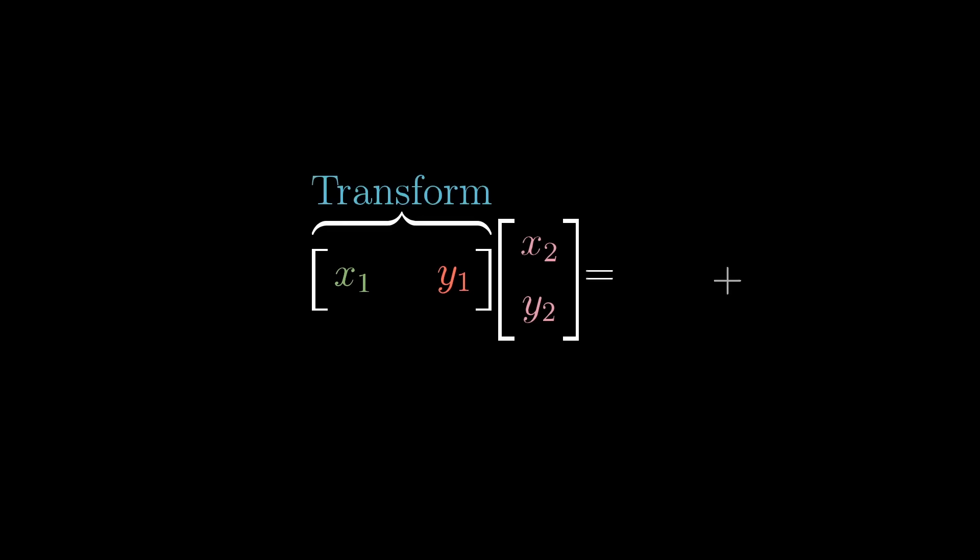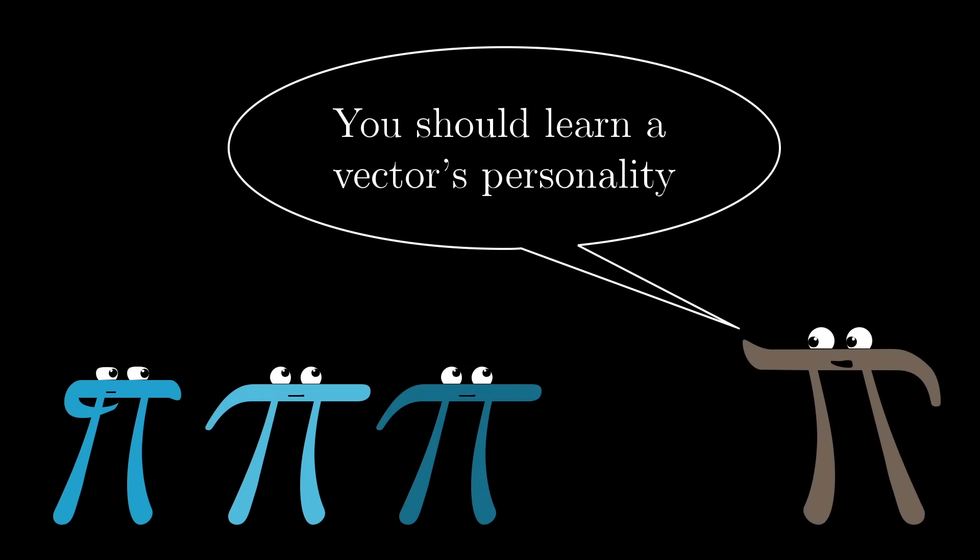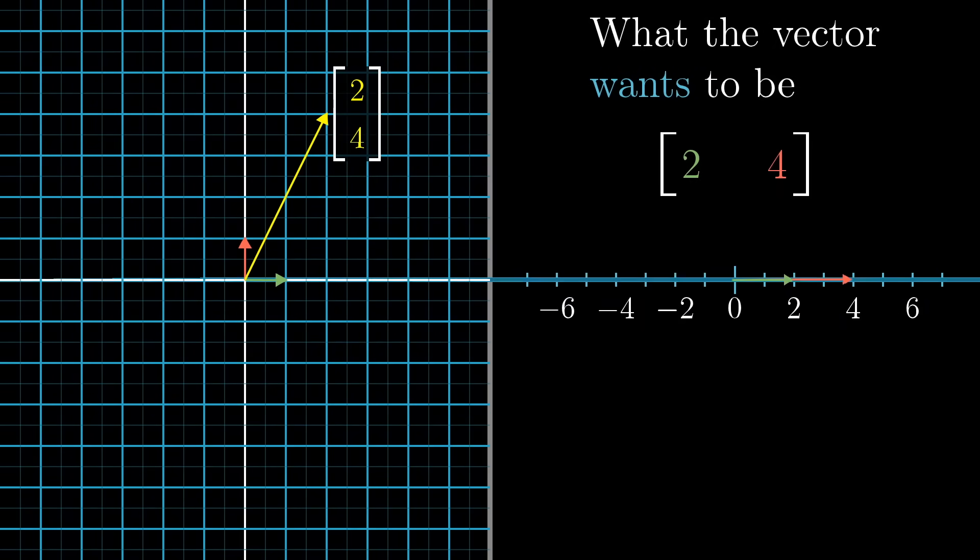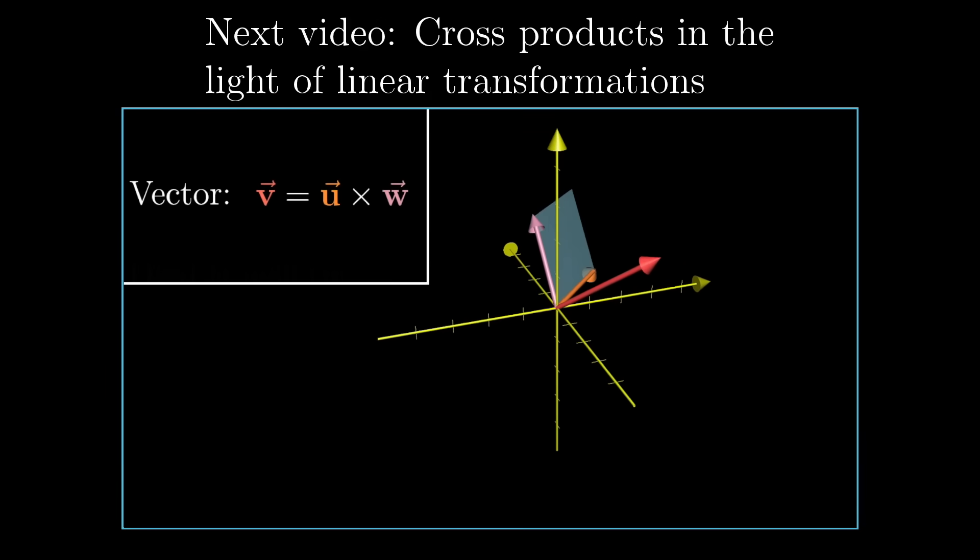It's just two computations that happen to look similar. But the reason I find this so important is that throughout math, when you're dealing with a vector, once you really get to know its personality, sometimes you realize that it's easier to understand it not as an arrow in space, but as the physical embodiment of a linear transformation. It's as if the vector is really just a conceptual shorthand for a certain transformation, since it's easier for us to think about arrows in space, rather than moving all of that space to the number line. In the next video, you'll see another really cool example of this duality in action, as I talk about the cross product.